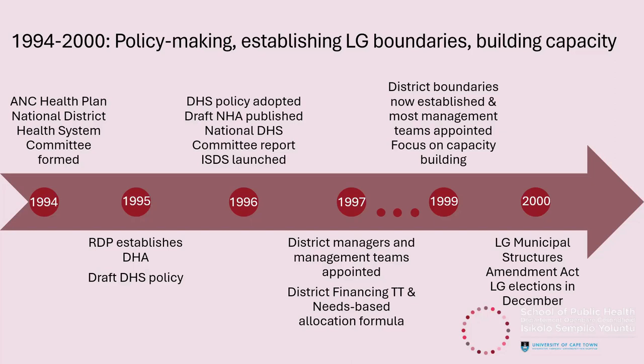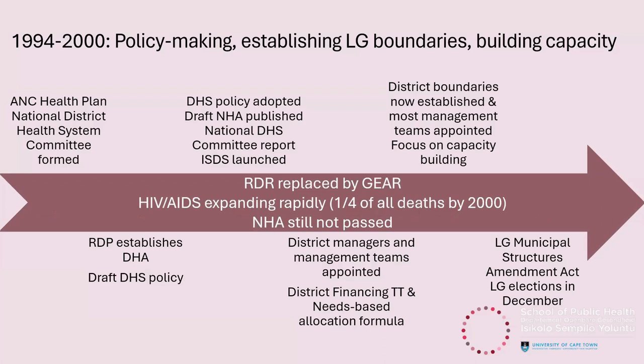By 2000, there were 53 health districts including six metropolitan districts. The Local Government Municipal Structures Amendment Act was passed, allocating the function of all municipal health services to district municipalities. The local government elections in December 2000 heralded the final stage of the transformation of local government and paved the way for full implementation of the district health system. However, the RDP was replaced by GEAR, which restricted public spending, and the HIV crisis was rapidly expanding — by the end of 2001, about half of deaths were HIV-related, and the National Health Act was still not passed.